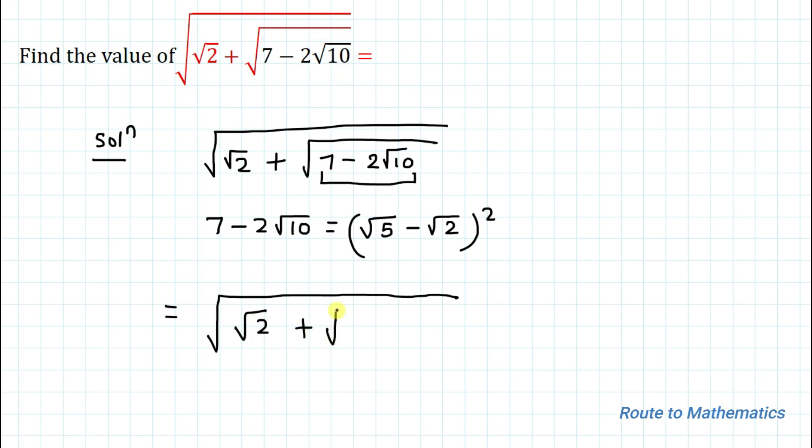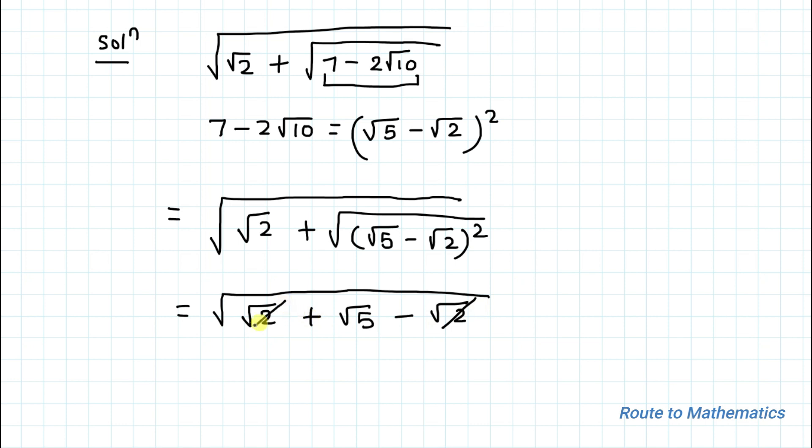So we have root 2 plus root of root 5 minus root 2 square. So square root and this one is the whole square, this will get cancelled out. So we have root 2 plus root 5 minus root 2.